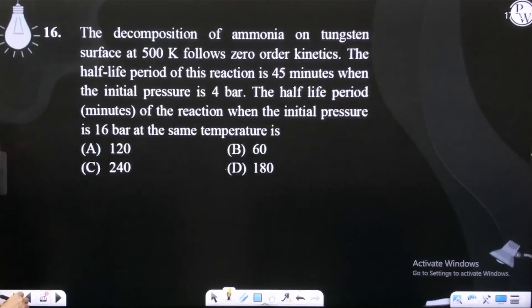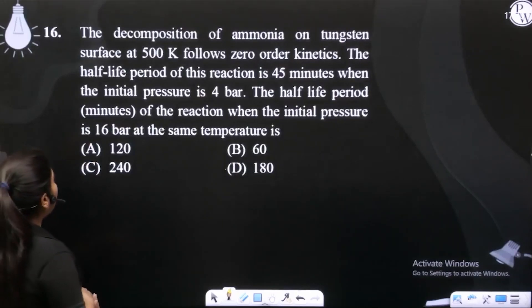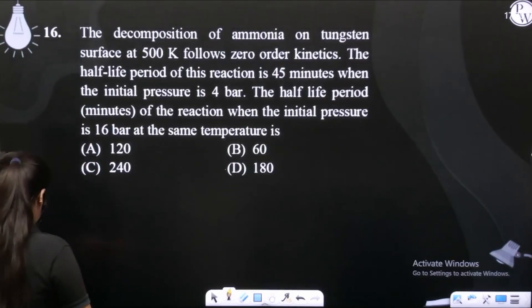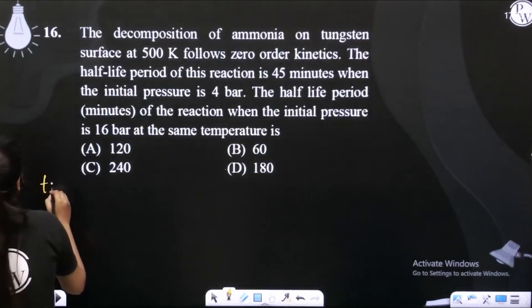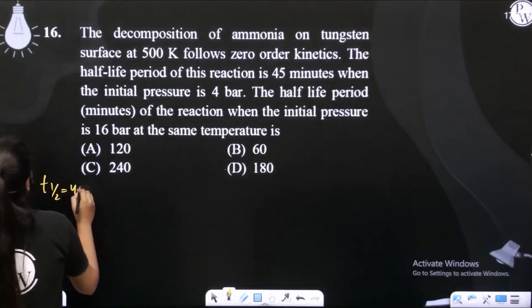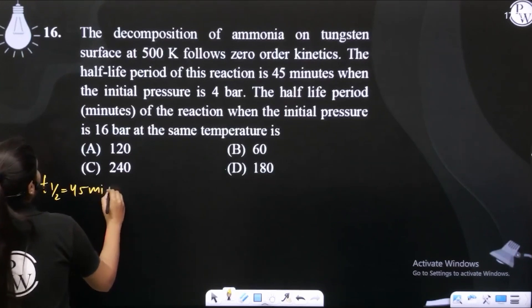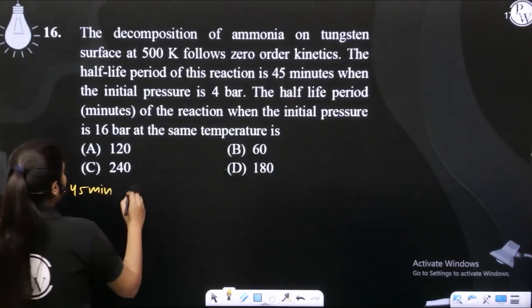The decomposition of ammonia on tungsten surface at 500 Kelvin follows zero order kinetics. The half-life period of this reaction is 45 minutes. Half-life hai 45 minutes jab initial pressure kitna hai? 4 bar.